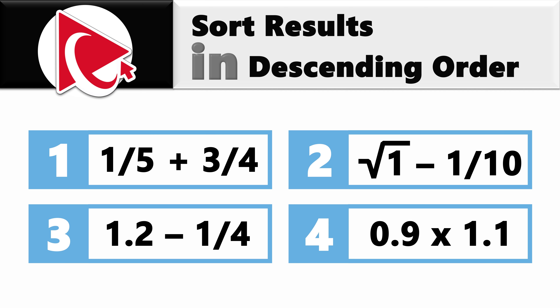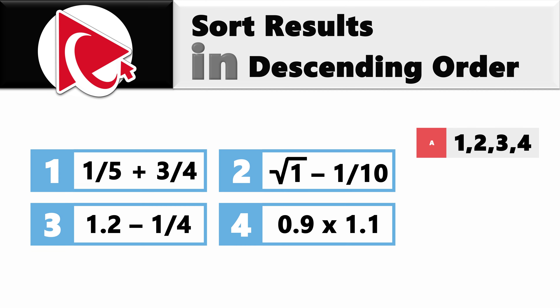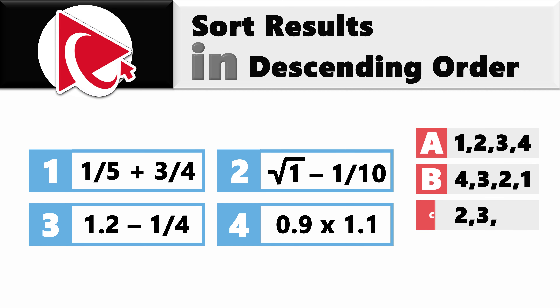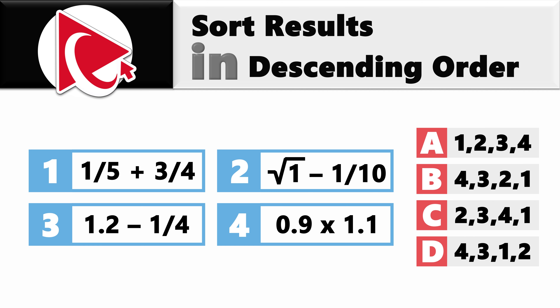Take a close look at these expressions, do the math, and then select your answer out of four possible choices. Choice A represents descending order as 1, 2, 3, and 4. Choice B represents 4, 3, 2, 1. Choice C: 2, 3, 4, 1. And last but not least, Choice D: 4, 3, 1, 2.